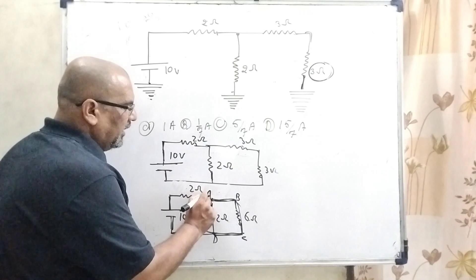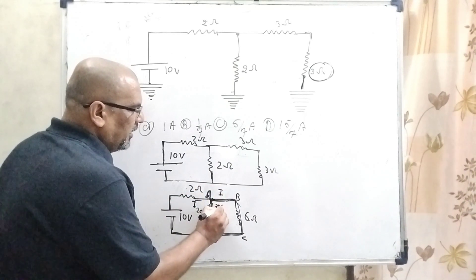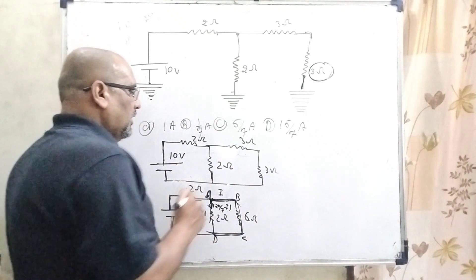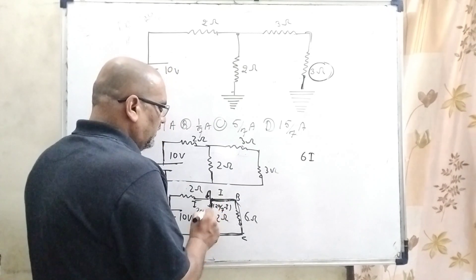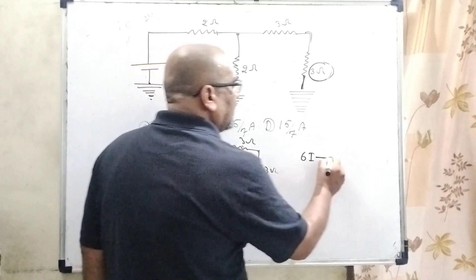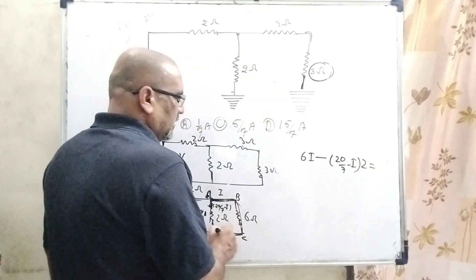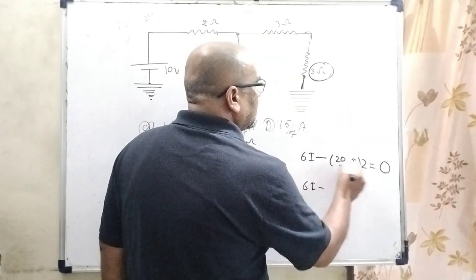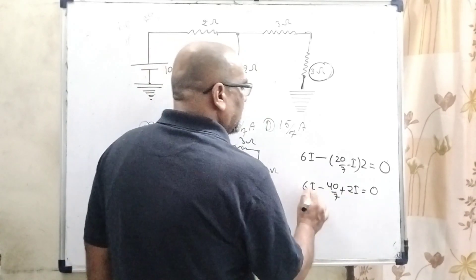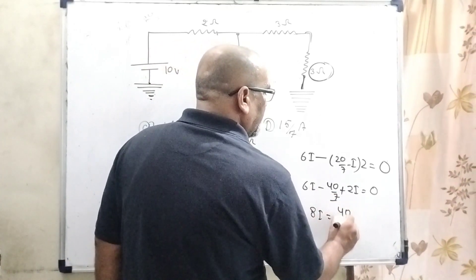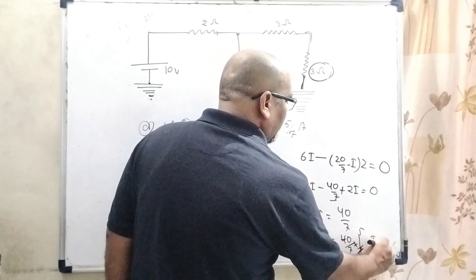Now in this question we have to find the amount of current flowing in this 3 ohm resistance. Approaching at junction A, the current is distributed in two ways. Let us suppose along path AB the current is I, and the remaining current is 20 by 7 minus I. By using Kirchhoff's closed loop: along AB there is 6 ohm resistance, so multiply by I, and against the direction of current we use minus. The remaining current is 20 by 7 minus I through the 2 ohm branch, equal to zero. Then 6I minus 2 times (20 by 7 minus I) equals 0, giving 8I equals 40 by 7, so I equals 5 by 7 ampere.